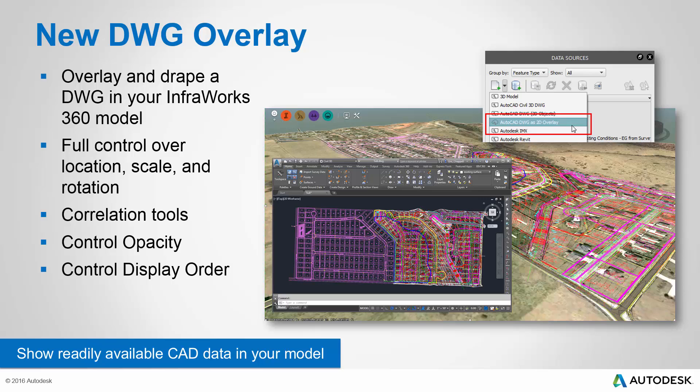In the last update to InfraWorks 360, you gained the ability to do overlays of raster images. Now it gets even better — you can now overlay DWG files in your InfraWorks 360 model. All of those thousands of CAD drawings created in Civil 3D, AutoCAD, or other AutoCAD-based products can now be shown very quickly and easily in your model. You have full control over location, scale, and rotation of the DWG overlay, plus correlation tools to align it with your model. You can control opacity and even display order if you have multiple overlays. This allows you to show your readily available CAD data in your model very easily.